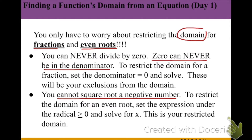You can never divide by zero, so when we're trying to find the domain of a fraction, we can never have the value of zero in the denominator. To restrict the domain of a fraction, we're going to set the denominator equal to zero and then solve. Whatever the solution is will be the excluded or restricted values, excluded from the domain. Also, we cannot take the square root of a negative number. To restrict the domain for an even root, set the expression under the radical greater than or equal to zero and solve for x.